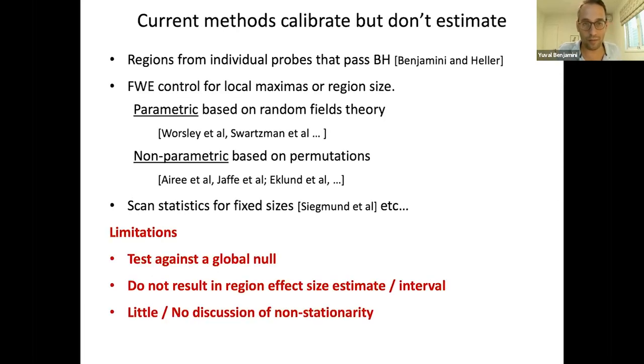What is the problem with these methods? First of all, all they can do is test against the global null. They cannot tell you anything about the cluster size or cluster significance as an effect size. The p-value only measures how likely this is under a null. In biology and psychology, we have a lot of effects that are real but are just very small and not so interesting. So these analyses do not result in either a region effect size estimate or a confidence interval. The second problem is that the permutation methods and the parametric methods are both based on stationarity assumptions, which is often not true.